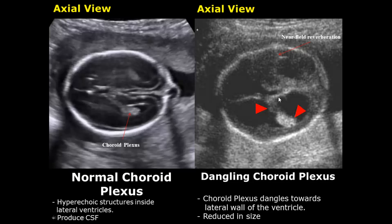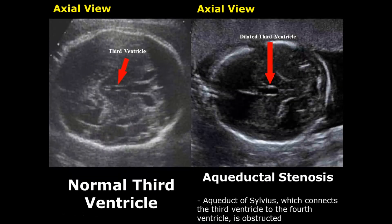In dangling choroid plexus, the choroid plexus will be reduced in size and will appear to float or dangle inside the lateral ventricle. In aqueductal stenosis, the aqueduct of Sylvius — which connects the third ventricle to the fourth ventricle — is obstructed, leading to dilatation of both the third ventricle and the lateral ventricles.